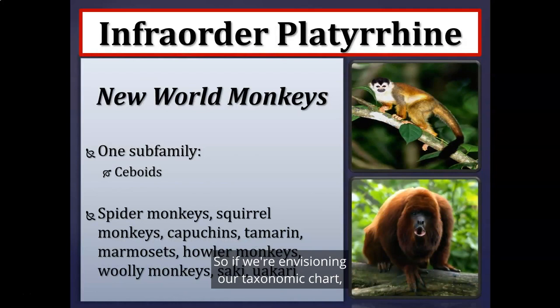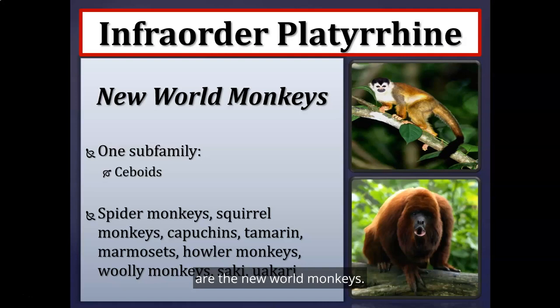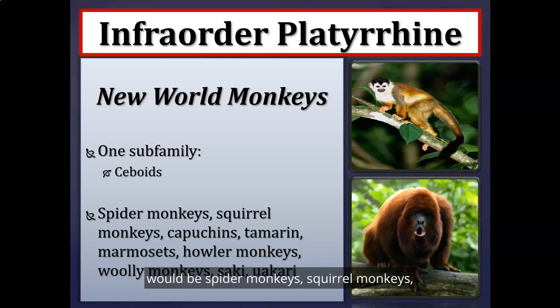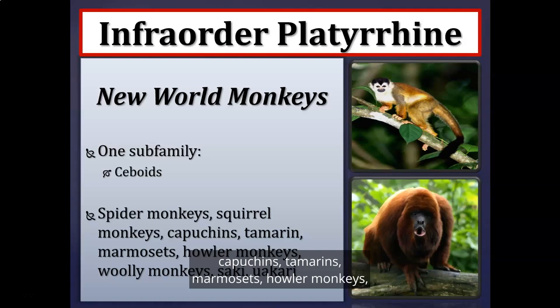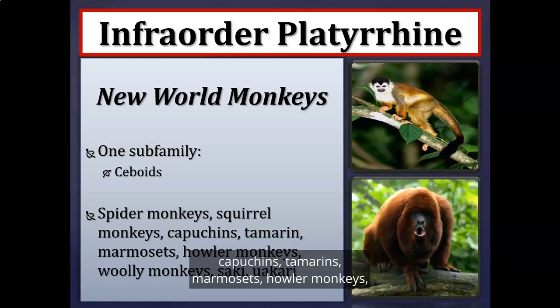Moving under haplorhines: the first infraorder is platyrrhines, also known as New World monkeys, found naturally in South and Central America. Examples include spider monkeys, squirrel monkeys, capuchins, tamarins, marmosets, howler monkeys, woolly monkeys, sakis, and uakaris.